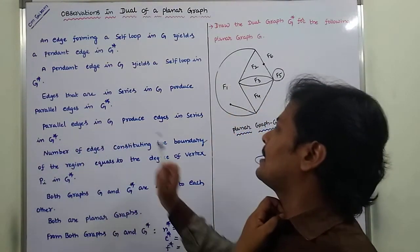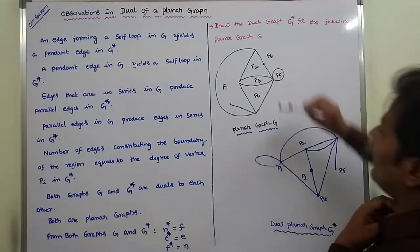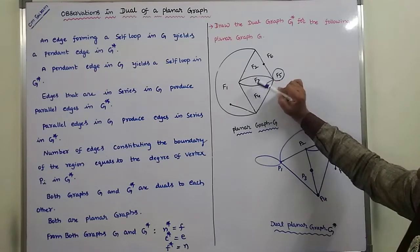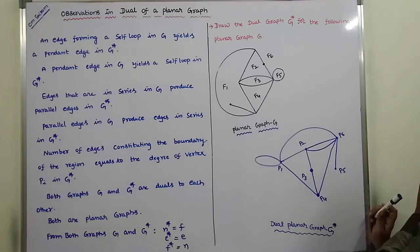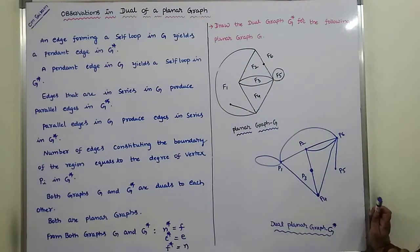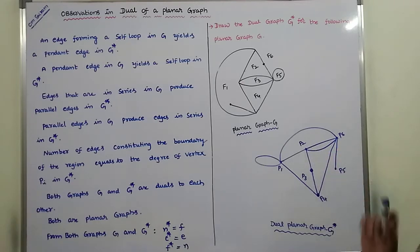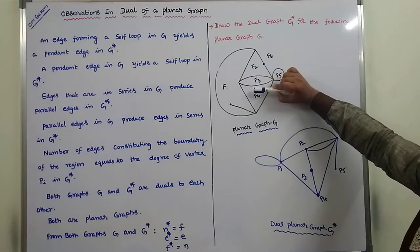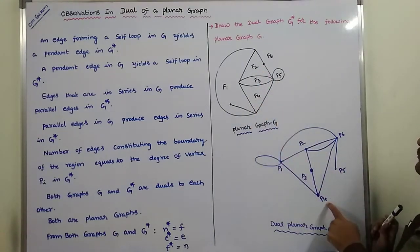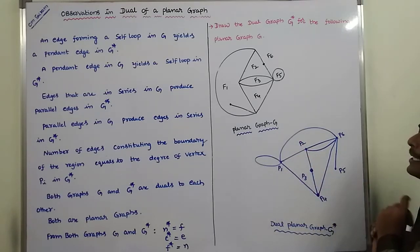Fourth point: parallel edges in G produce edges in series in G star. Here F3 contains parallel edges, and these parallel edges exist between F2 and F4 regions. F2 and F4 regions are separated by two parallel edges. In G star, F2's corresponding vertex is P2 and F4's corresponding vertex is P4. P2 and P4 are connected by a series of two edges through region F3.